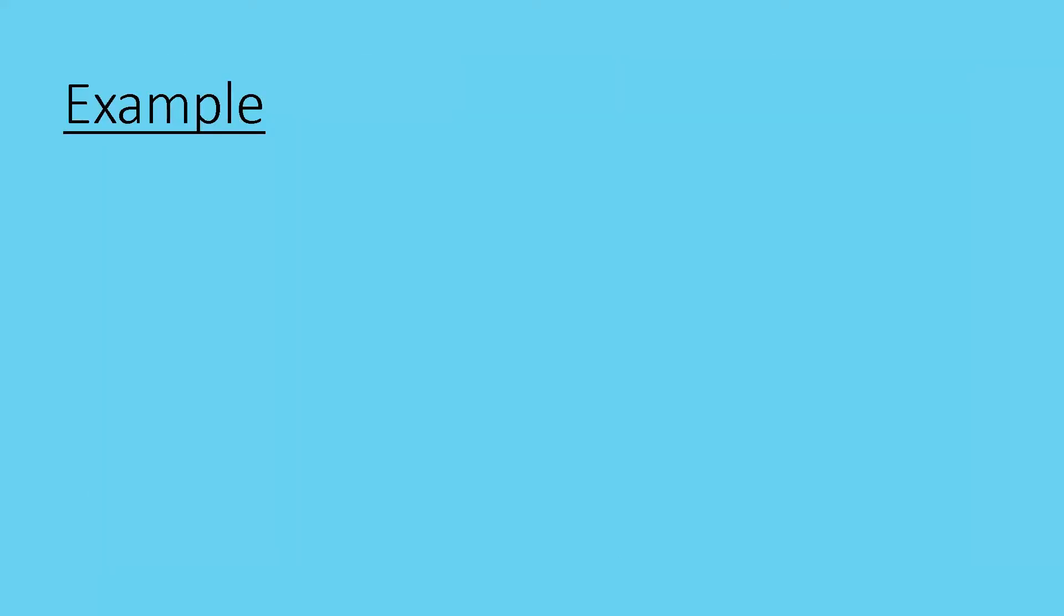Okay, now, looking at an example that involves some flat-pack furniture. Miss Jones bought a desk from a Chinese supplier, and the instructions were all in Chinese. Thankfully, there was an assembly diagram provided. So you can see all the parts are shown there with different numbers on them, all right. And then a diagram underneath of how you're expected to put them all together. You kind of guess how you're supposed to put them in the right order.